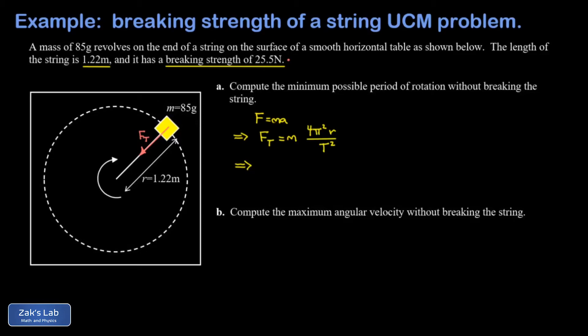In other words, our fastest rotation rate right before the string breaks. So we go about solving for T. I'm going to multiply both sides by T² and divide both sides by Ft, and then we square root both sides to solve for T. The square root of 4π² is 2π, so we'll pull that out.